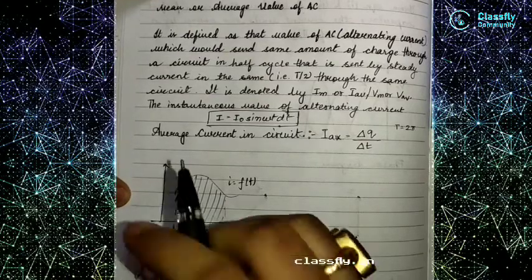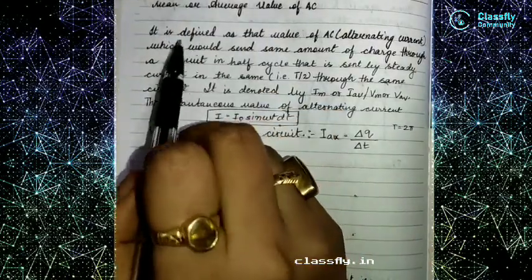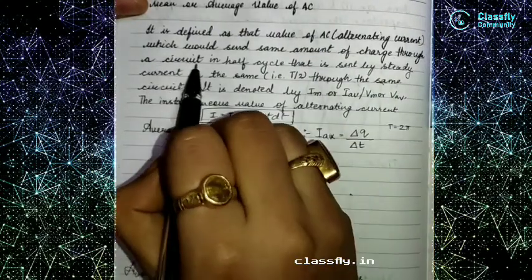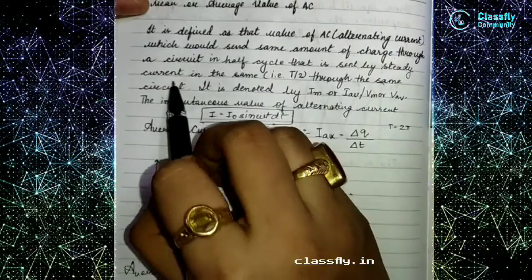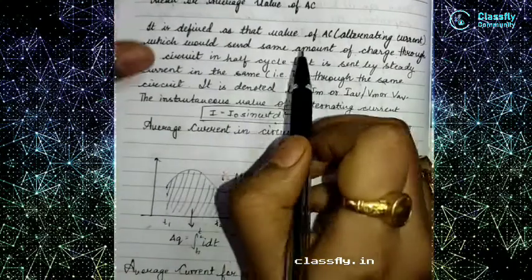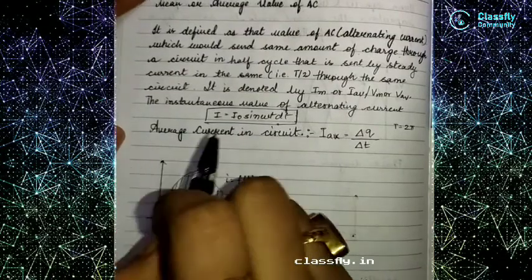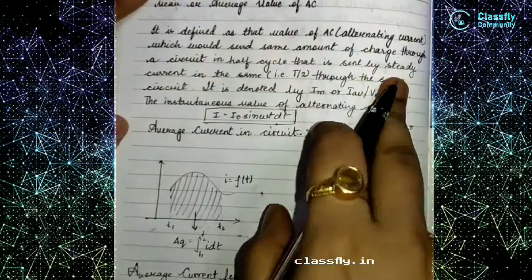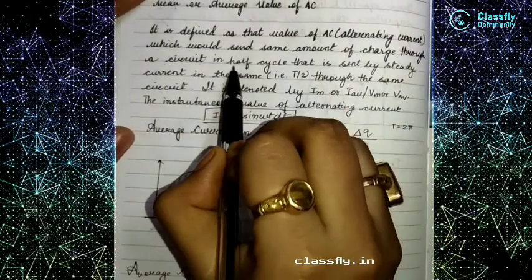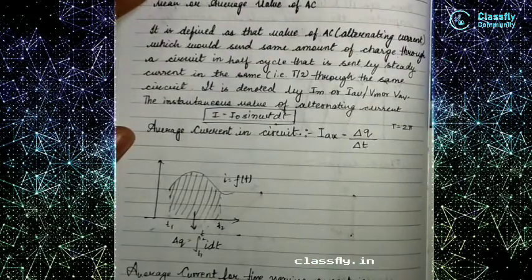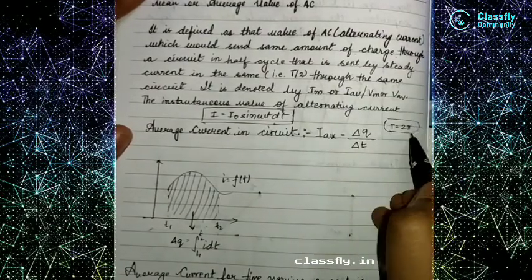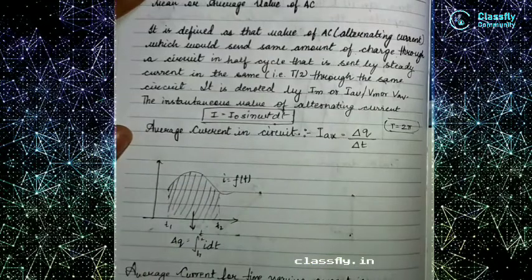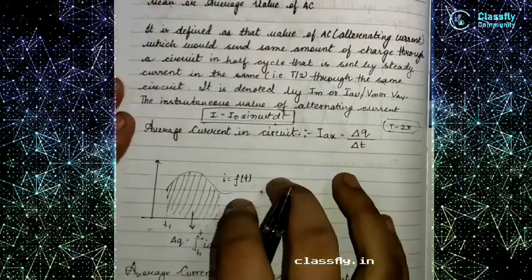Here we will do a different approach. It is defined as that value of AC which would send the same amount of current through a circuit in half cycle as that sent by steady current through the same circuit. Basically, there will be a value for AC which would provide the same amount of charge through a circuit in the half cycle, similar to the steady current. We know that the half cycle will be π, because the full cycle is 2π (360 degrees), so half is 180 degrees, which is π.